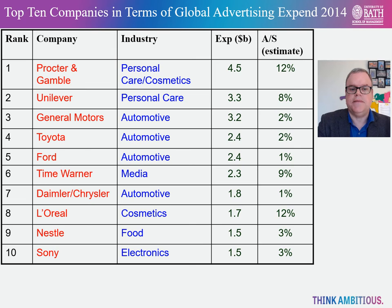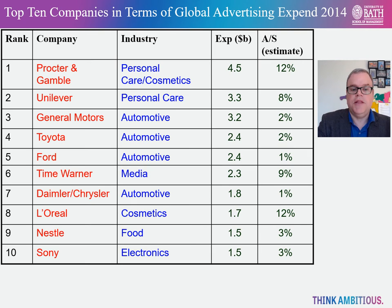You can observe some patterns. Notice how firms in the same sector tend to have similar levels of advertising intensity as their rivals. For instance, Procter & Gamble and Unilever in Personal Care, and Toyota, Ford and General Motors in the automotive sector all record similar levels of advertising intensity. Recall from oligopoly theory that firms are aware of the interdependent nature of competition, and will therefore seek to match their rivals' actions. We might also think about the durability of products on offer, and the degree of brand proliferation in the market.